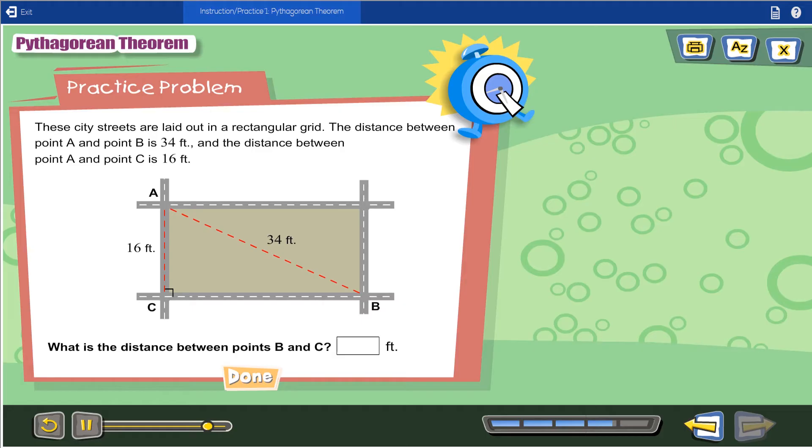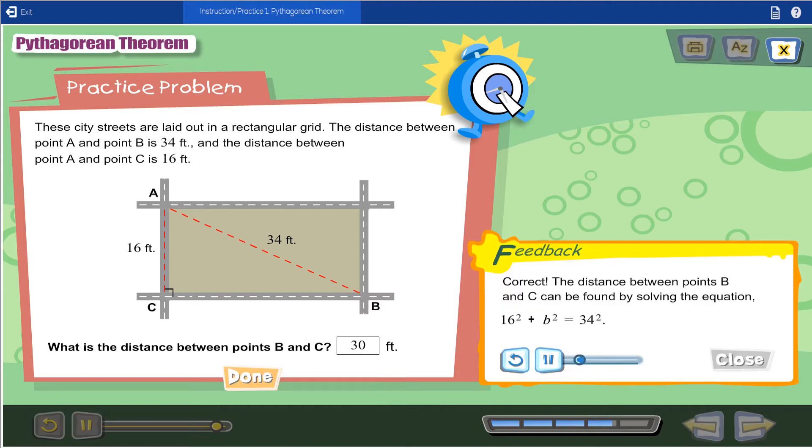What is the distance between points B and C? As a parent, one of the things I really appreciate about Time for Learning's math lessons is how feedback is given when answering questions or problems. Correct! The distance between points B and C can be found by solving the equation 16 squared plus B squared equals 34 squared.